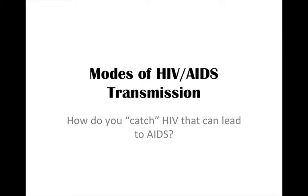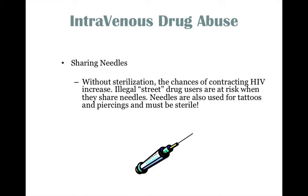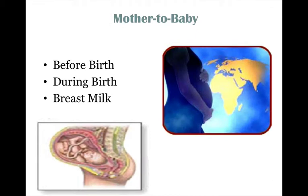How do you catch HIV that can lead to AIDS? Through bodily fluids — contaminated blood, body fluids, and sharing razor blades. Intravenous drug abuse: sharing needles can be very dangerous. Without sterilization, the chances of contracting HIV increase. Illegal street drug users are at risk when they share needles. Needles used for tattoos and piercings must also be sterile. You can catch HIV through sexual intercourse, and it can be passed on from mother to baby — before birth, during birth, and through breast milk.